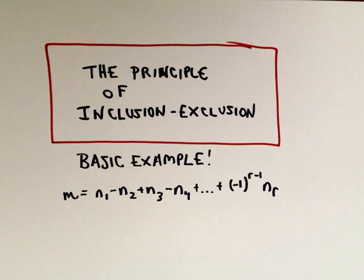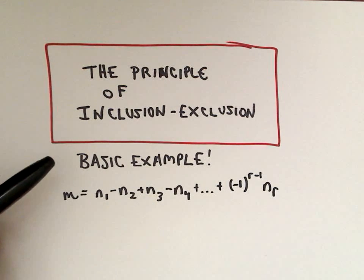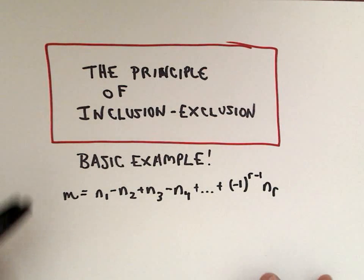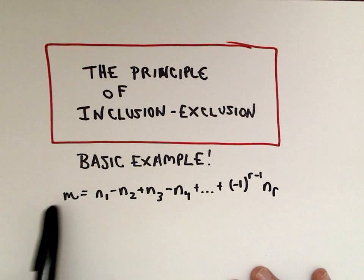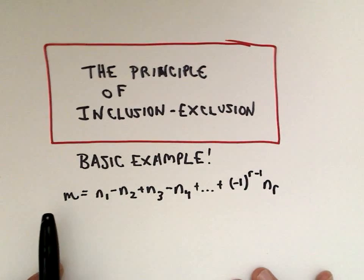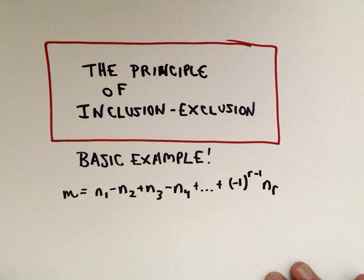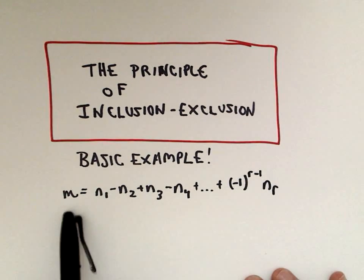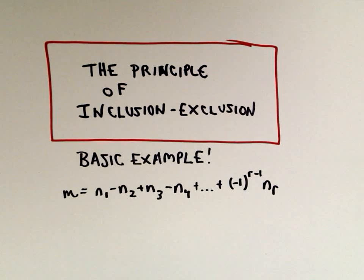In this video, we're going to talk about the principle of inclusion and exclusion, and we're going to do another basic example. In the previous videos, we talked about a basic example and then proceeded to come up with a formula, which we actually proved. If you're coming to this without having seen that proof, you'll still be able to follow this video. Let's look at a basic example.